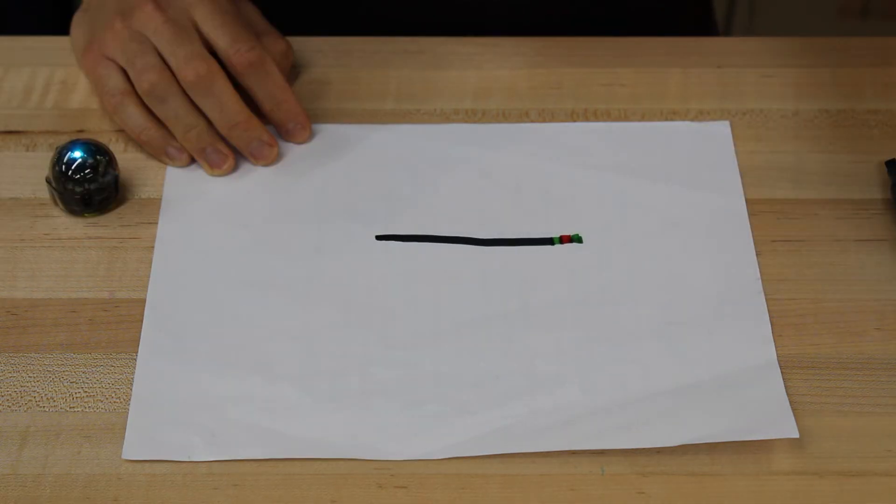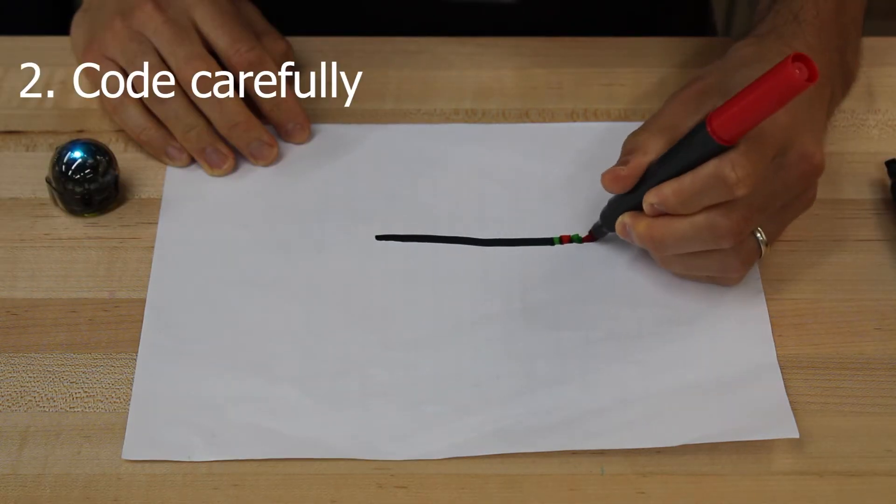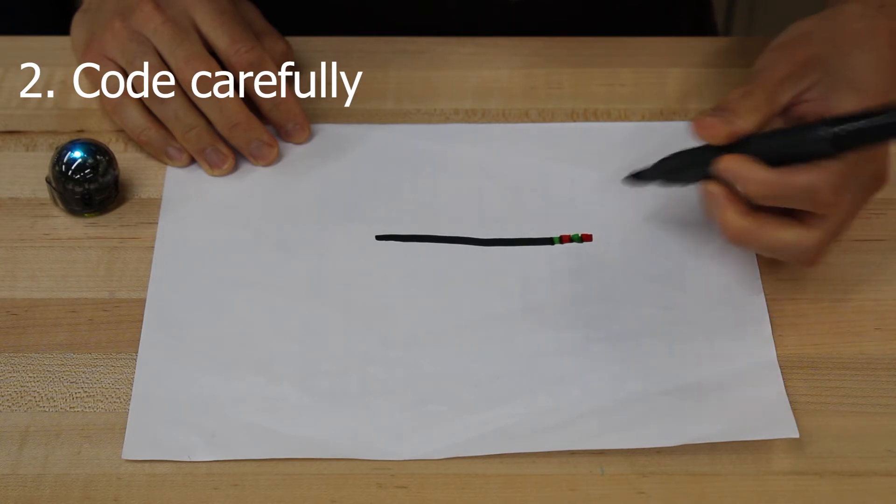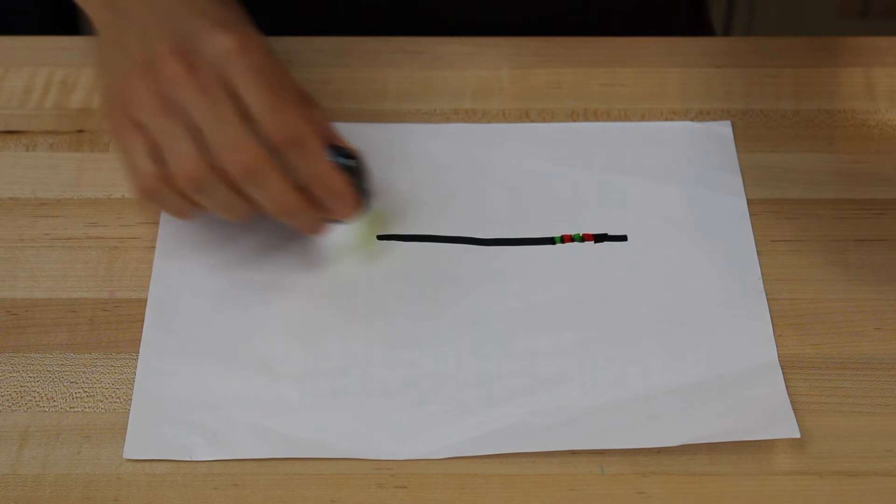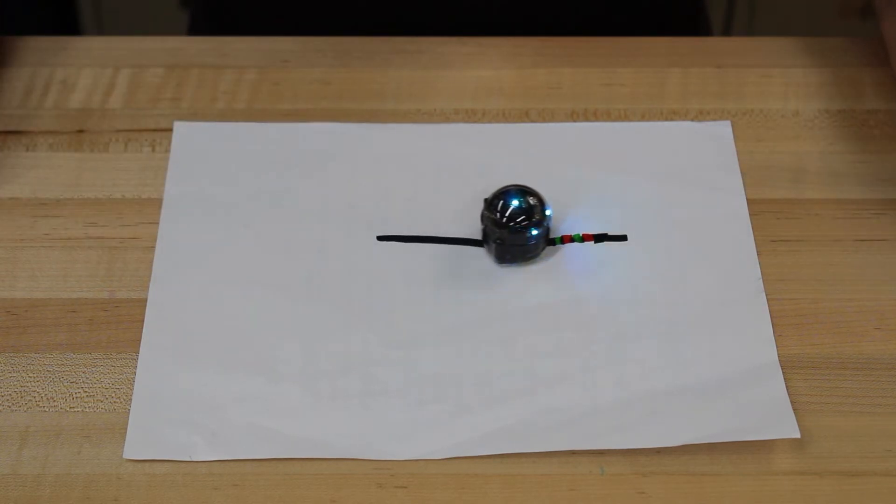Number 2. Code carefully. Color codes unlock a ton of new moves for Evo, but they can be tricky to draw. Try to make each color segment the same size. Again, not too big, not too small, but just right.